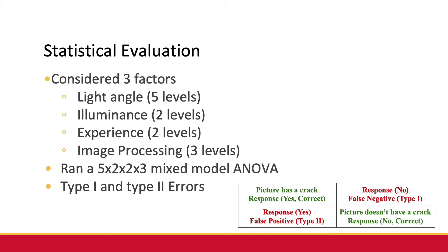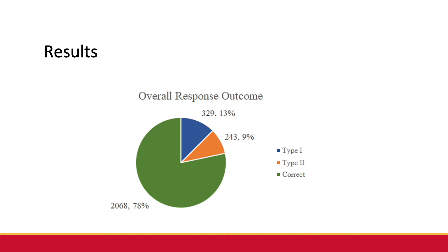We also looked at type 1 and type 2 errors. Type 1 being a false negative, where participants were saying there was no crack when there was a crack. Type 2 being a false positive, where participants were saying there was a crack when in fact there was no crack. The overall response rate was about 78%, a combination of experienced and non-experienced users, with type 1 errors being 13% and type 2 errors being 9%.